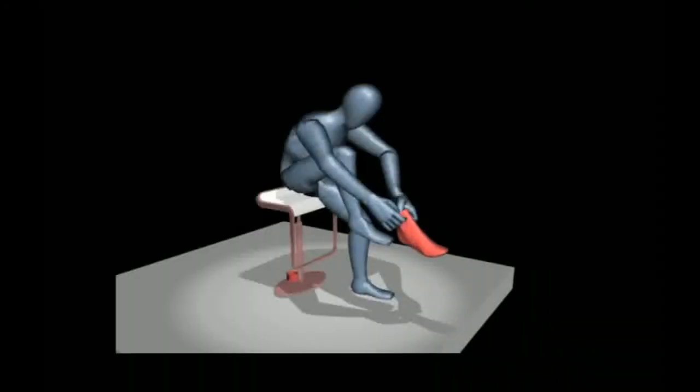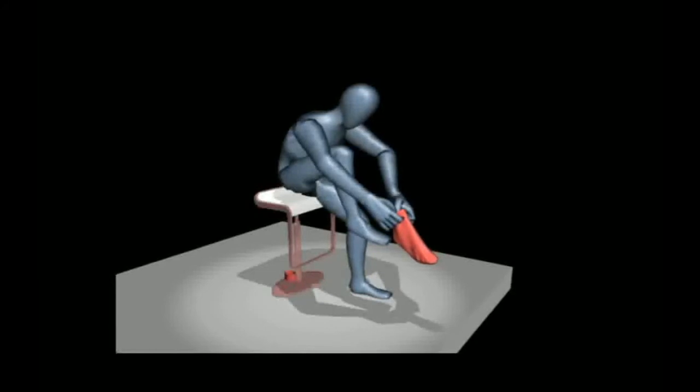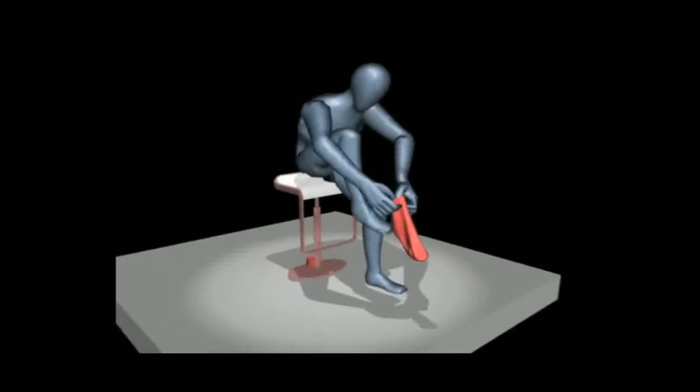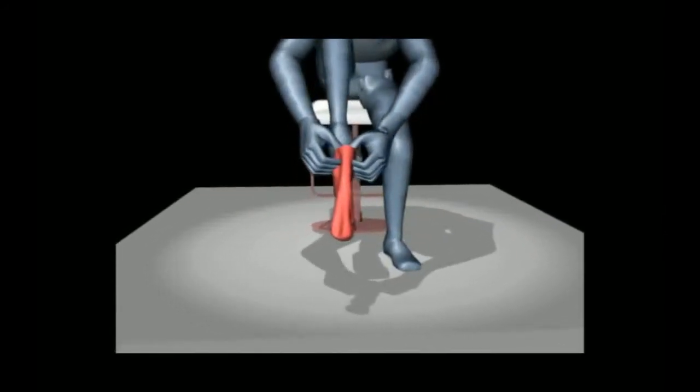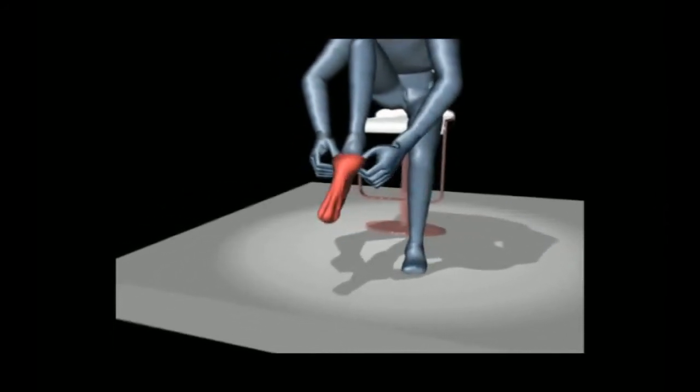We can also apply the method to simulate simple dressing movements. In this animation, a character is controlled to put on a sock. The sock's opening is controlled in the electric coordinates of the body, such that it approaches the tip of the toes to start the wrapping process.